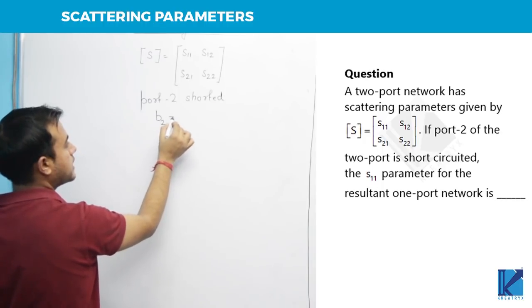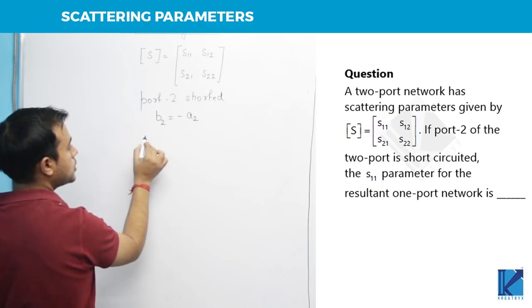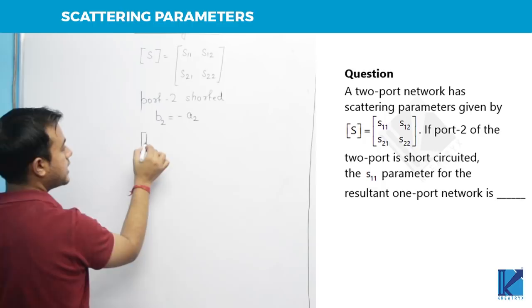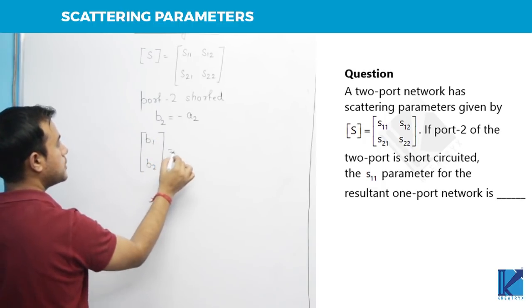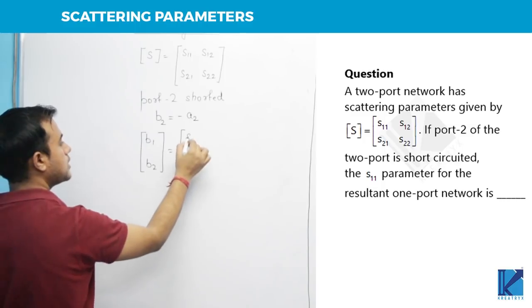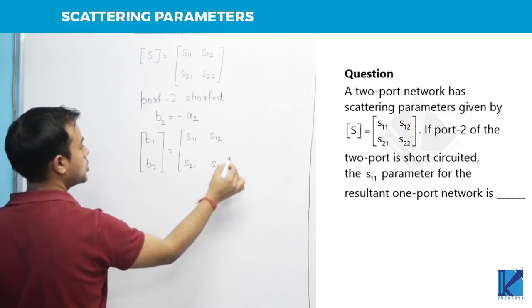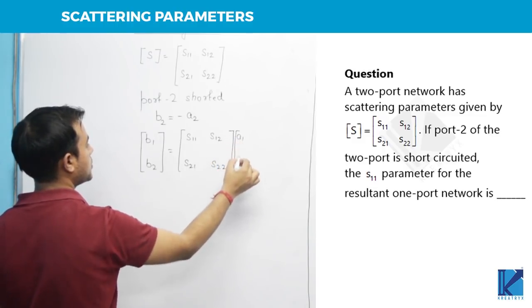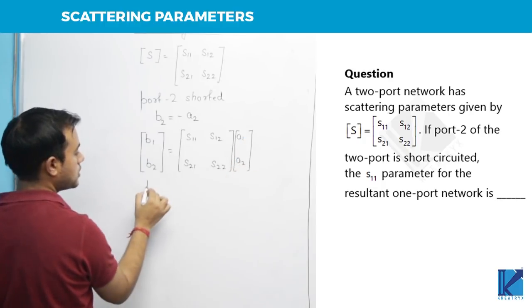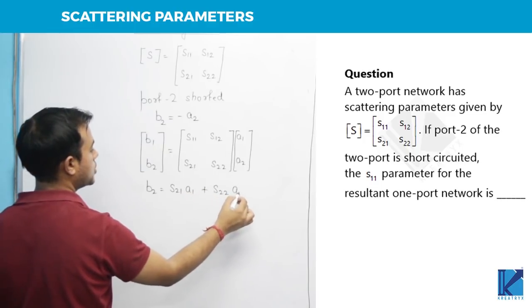Now, these scattering parameters can be written like this: B1, B2 should be equal to S11, S12, S21, S22, A1, A2. Now, if you write the equation of B2, it will be S21 A1 plus S22 A2.